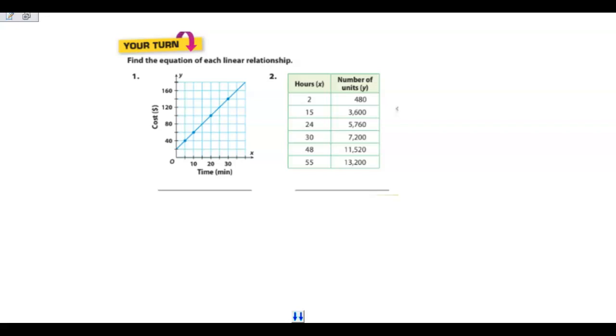Your turn. Number 1, they want you to find the equation of each linear relationship, and the first one, they give it to us in a graph form, and so what I'm going to do is I'm going to look for any two points on the graph that's going to be easy to work with. When I look at this, I notice that they're going up by 20s, and across here, they're going across by 5s, so I'm going to keep that in mind.